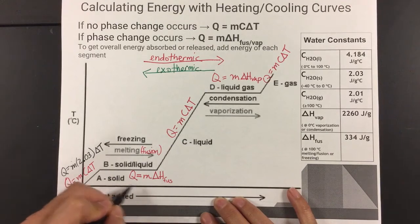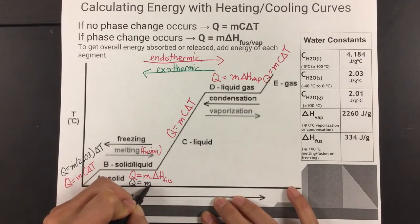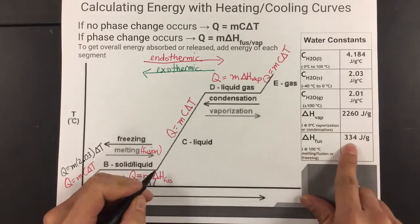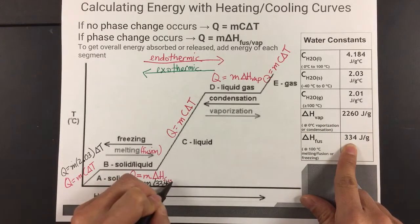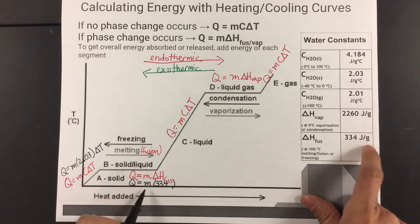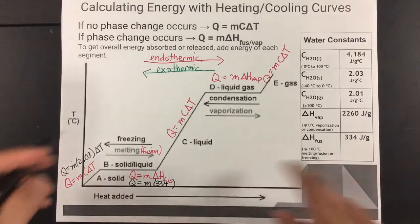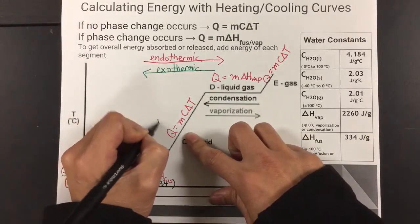Now we go down to this. So for water, Q equals m times ΔH fusion, which is 334 joules per gram. Now we're not going to put the units in, but note that it is joules per gram. So when you multiply it times grams, which is mass, you'll get joules in the end.